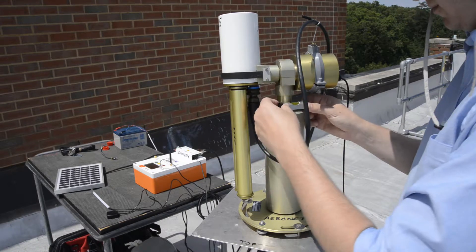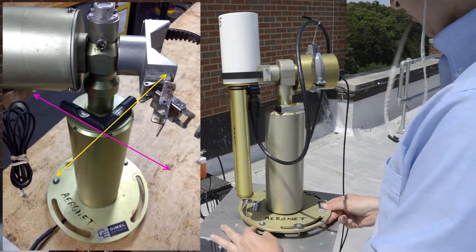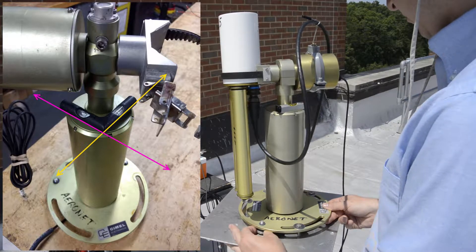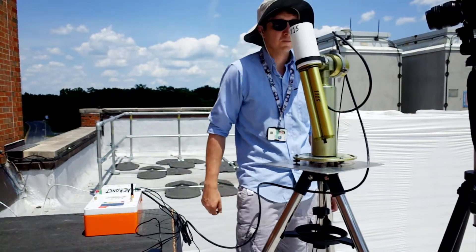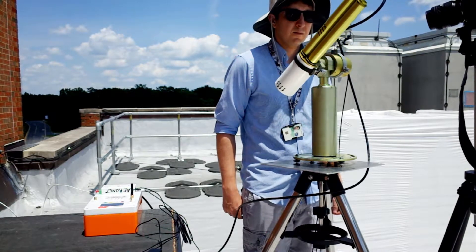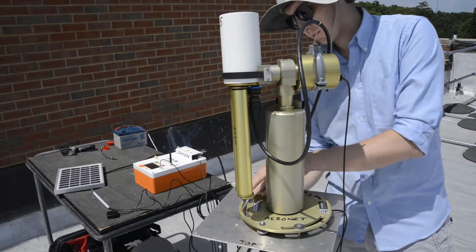There are two leveling screws on the robot base. Use the bubble level and the two screws to level the robot. Once the robot is level, check the sunspot alignment again, and then tighten the three bolts.